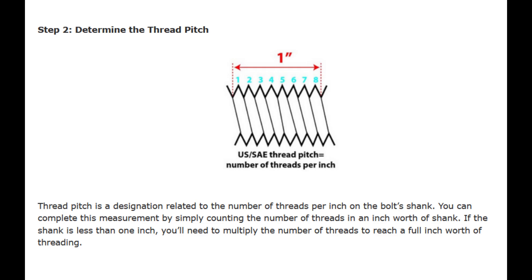Step 2: Determine the thread pitch. Thread pitch is a designation related to the number of threads per inch on the bolt's shank. You can complete this measurement by simply counting the number of threads in an inch worth of shank. If the shank is less than one inch, you'll need to multiply the number of threads to reach a full inch worth of threading.